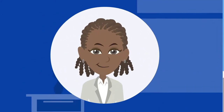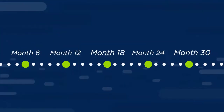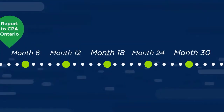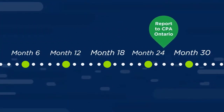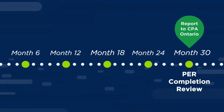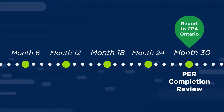If you're in the PPR route like Alice, you only have to report to CPA Ontario once — at the end of the training program. This is because you are following a training program that has already been pre-approved by CPA Ontario.